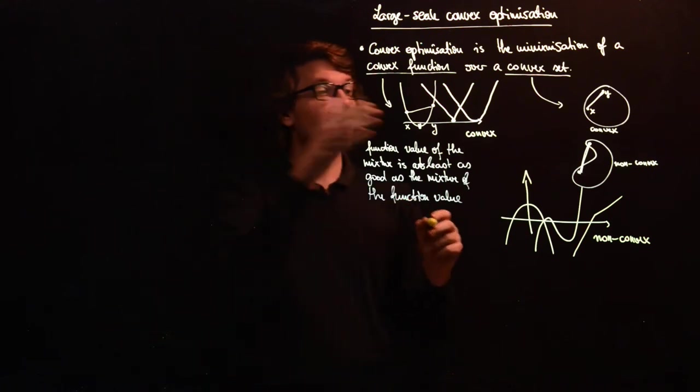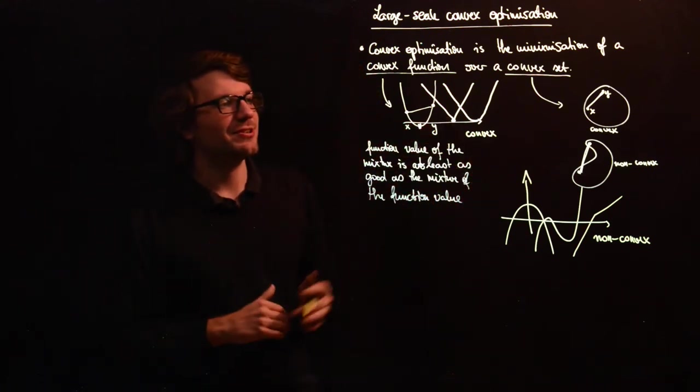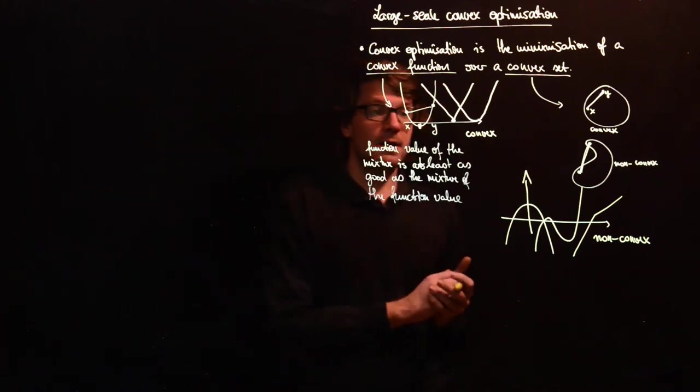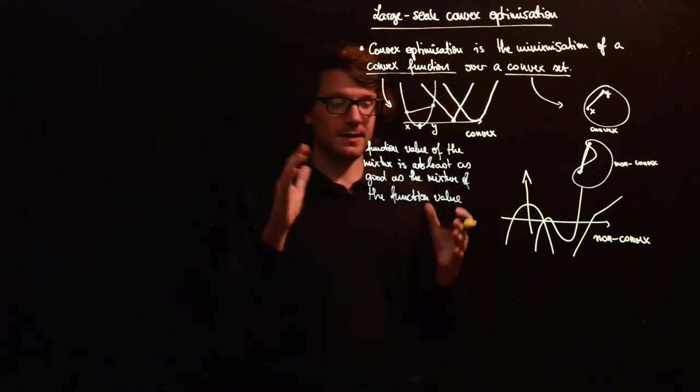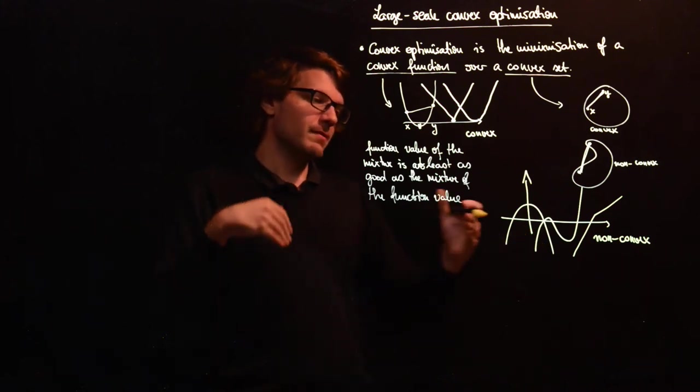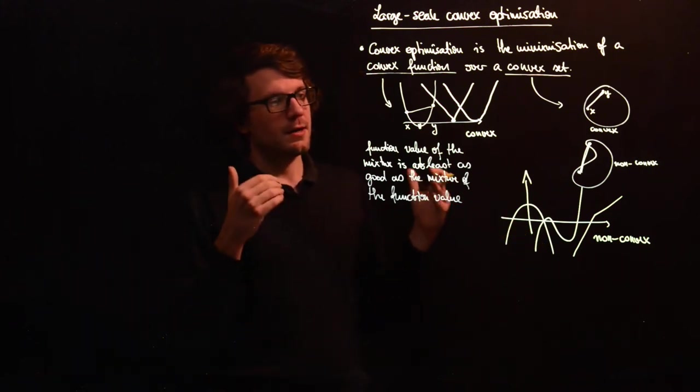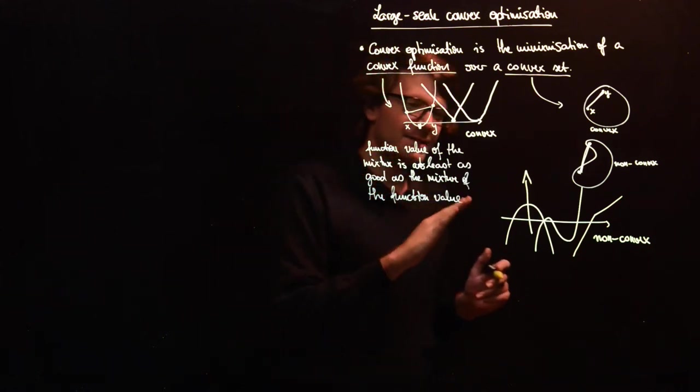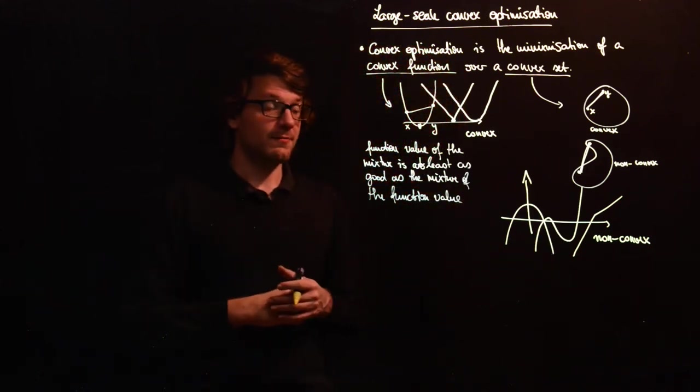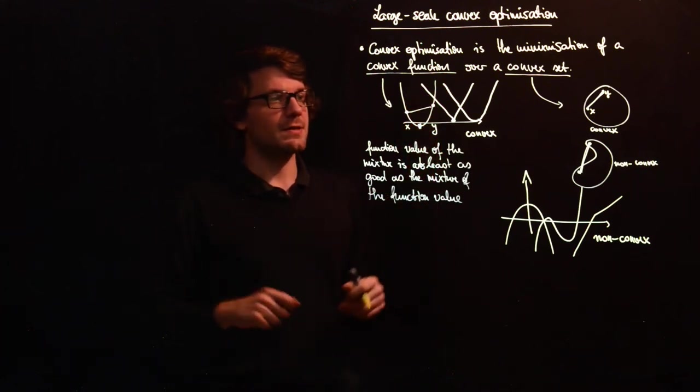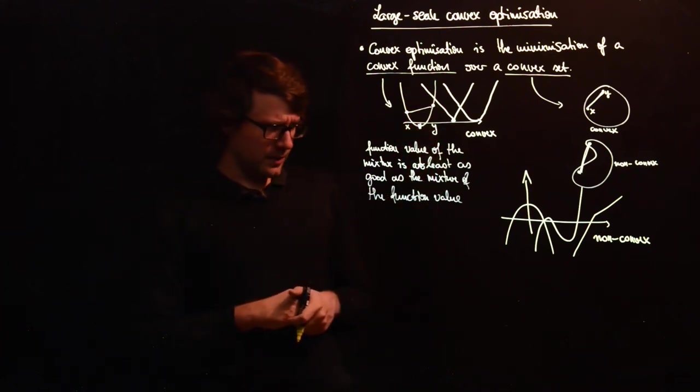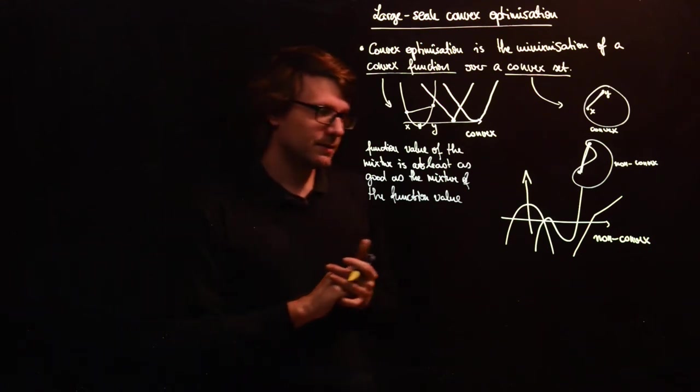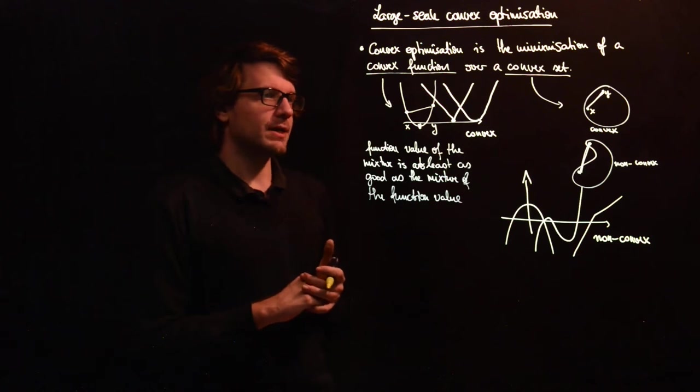Okay, so now we have just an intuition what convex functions mean, what convex optimization means. The guideline is that if you take compromises, something in the middle between two feasible points, then you can expect to be at least as good as the compromise between the function values at those two extreme points. We'll see some concrete examples what this means.